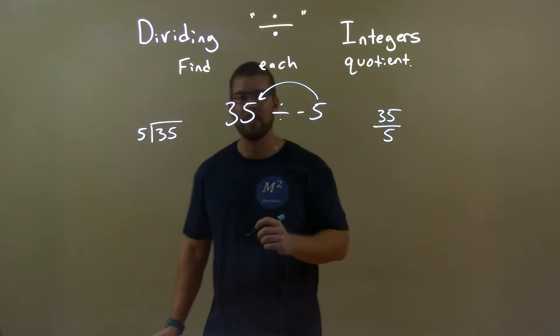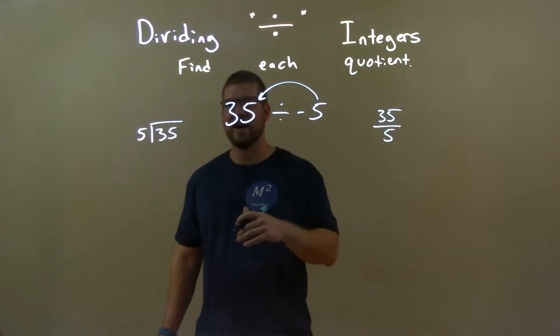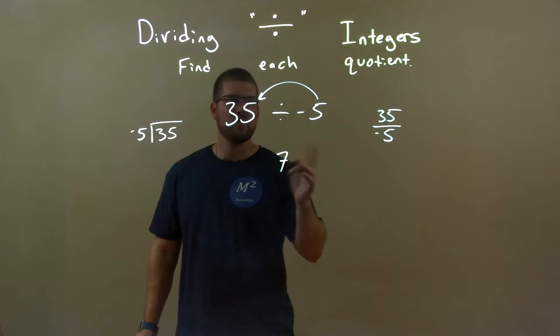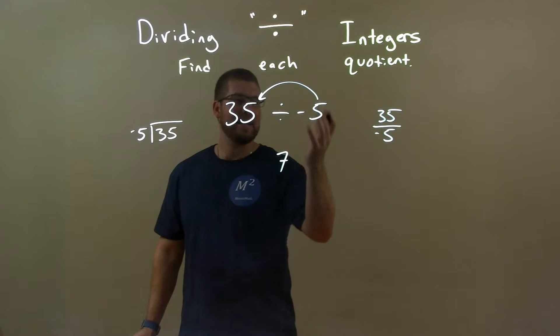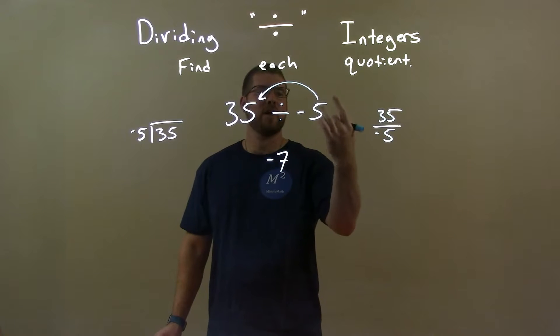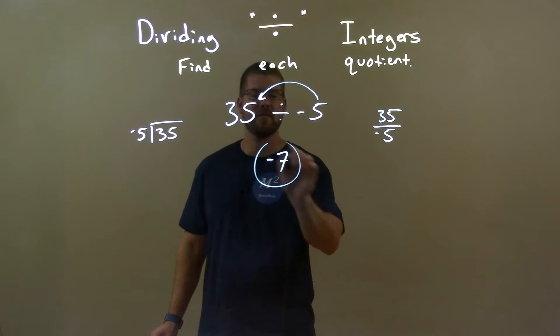Well, 5 goes into 35 seven times, okay? Now, we know this was negative, right? So when we divide by a negative number, we keep it a negative. And so, 35 divided by negative 5 is negative 7.